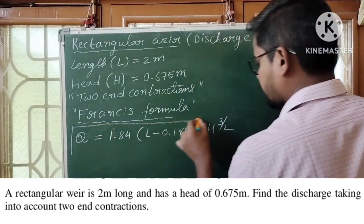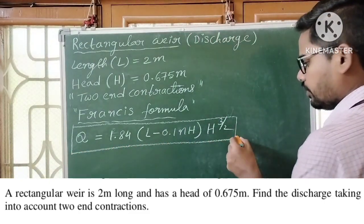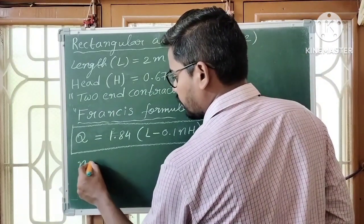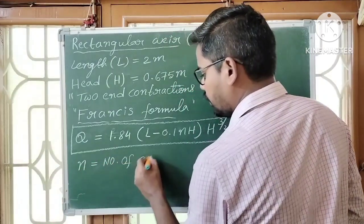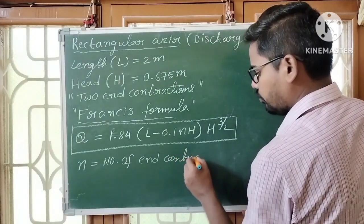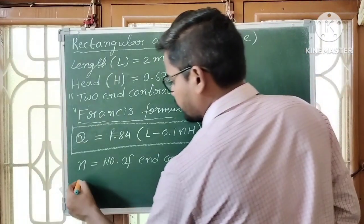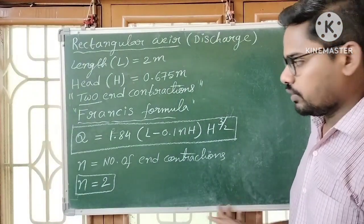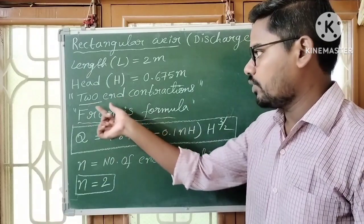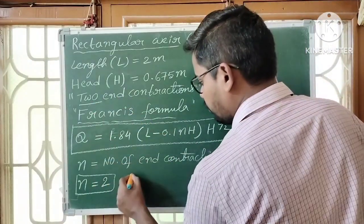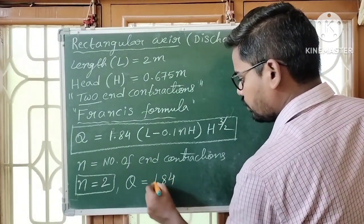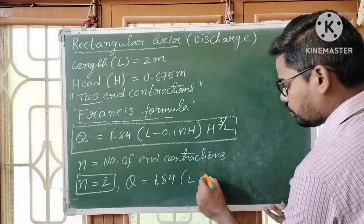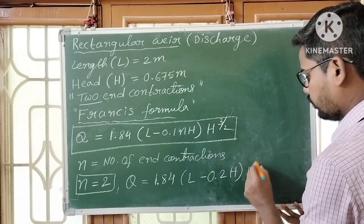Here N means number of end contractions. We are given two end contractions, so N is equal to 2. Therefore the formula becomes Q is equal to 1.84 into L minus 0.1 into 2, which gives L minus 0.2, into H into H power 3/2.